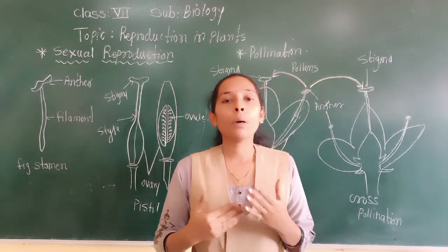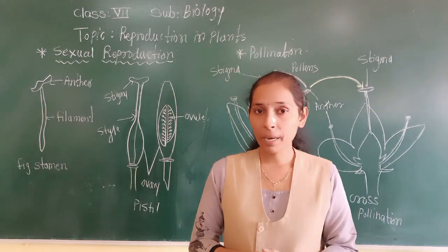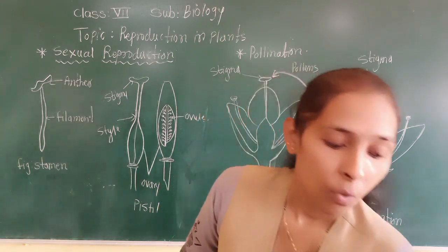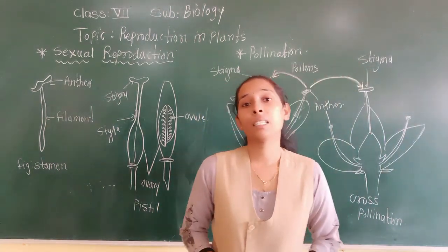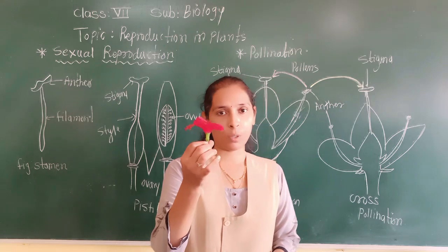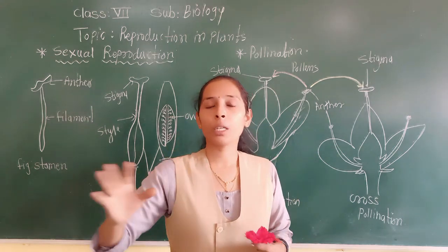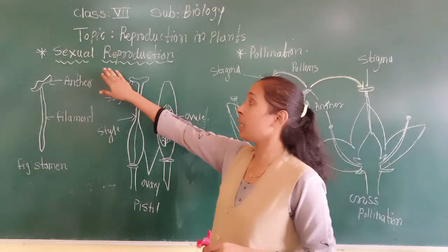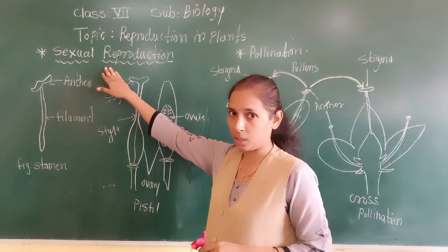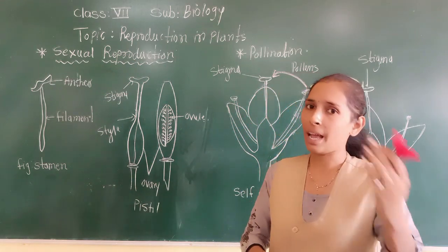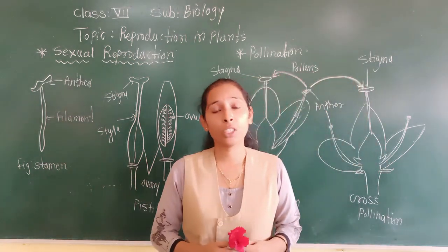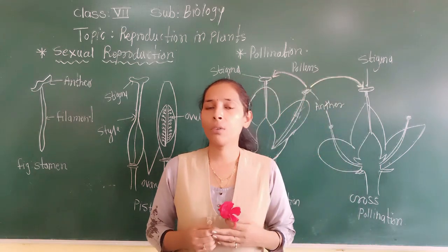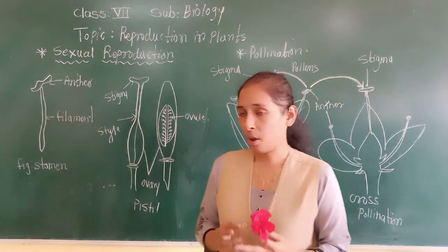If we talk about sexual reproduction in plants, then the vital role is performed by one part of a plant — that is the flower. The flower is the main reproductive organ in a plant, which plays a vital role in sexual reproduction. As you may know from last year, we have discussed the different parts of a flower, but again we will quickly discuss what the different parts of a flower are.